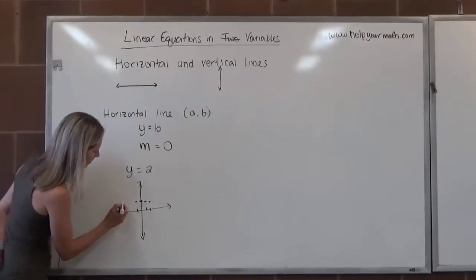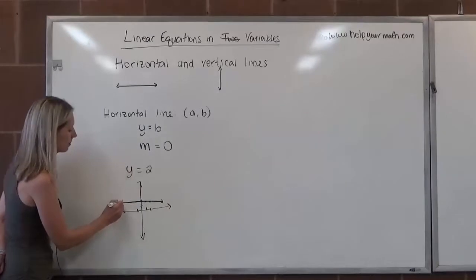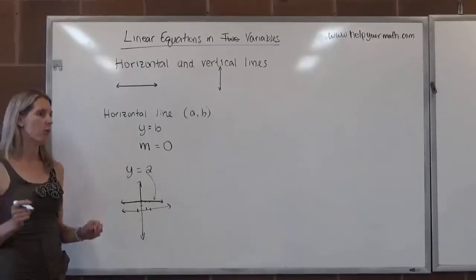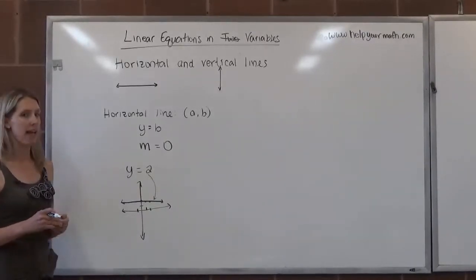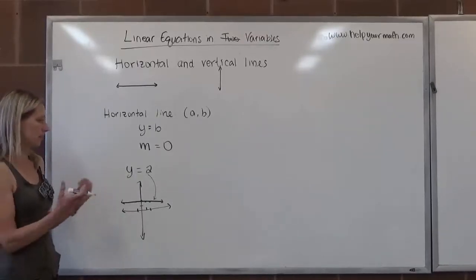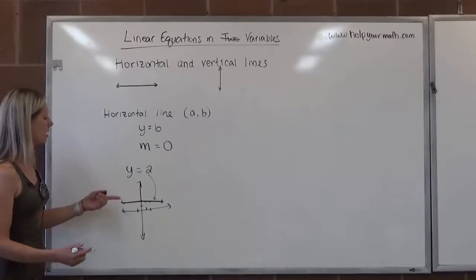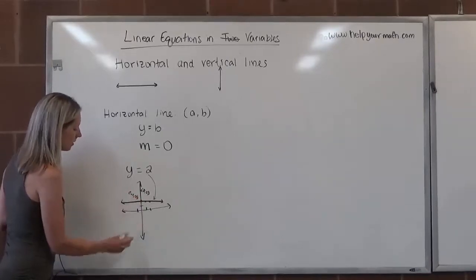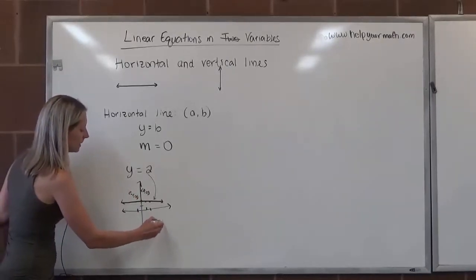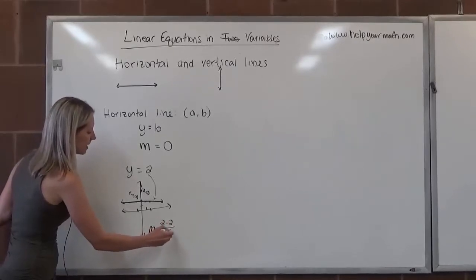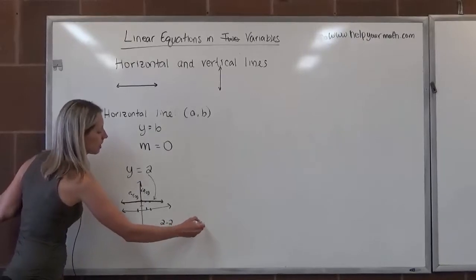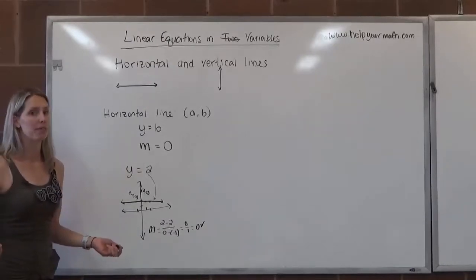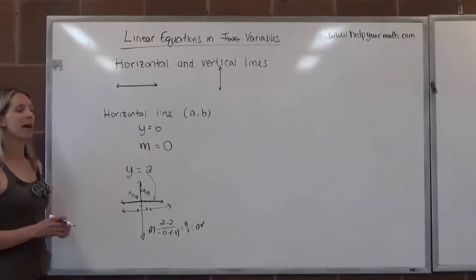So it's all of those points forming a horizontal line, parallel to the x-axis but 2 units above it. This is the graph of y equals 2 — all points where the y-coordinate is 2. It doesn't matter what x is. To confirm the slope, using the points (–1, 2) and (0, 2): the slope is (2 – 2) over (0 – (–1)), which is 0 over 1, which is 0. Any horizontal line — y equals 7, y equals –1,000,000 — has a slope of 0, and they're all given by y equals b.